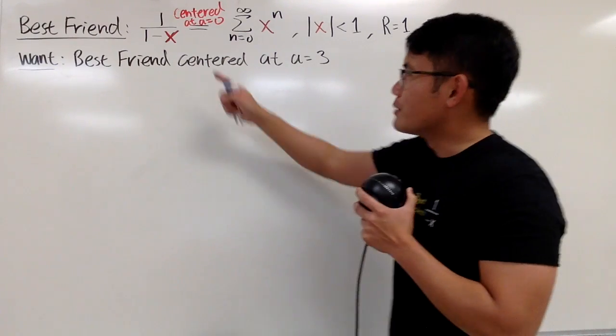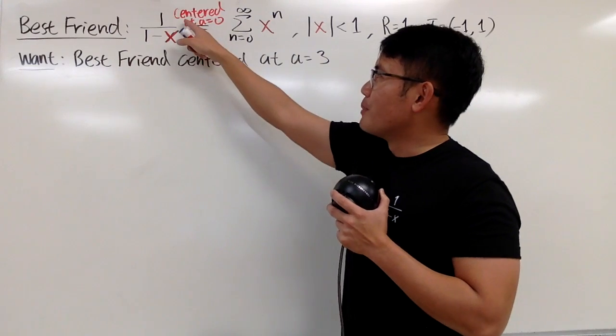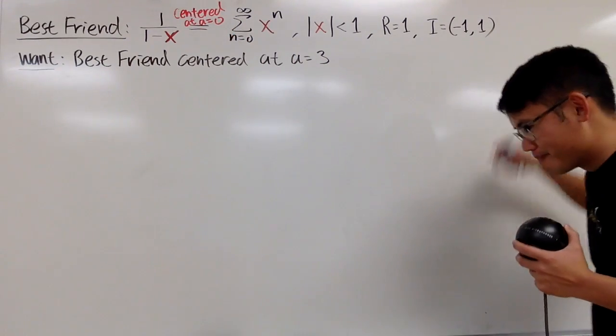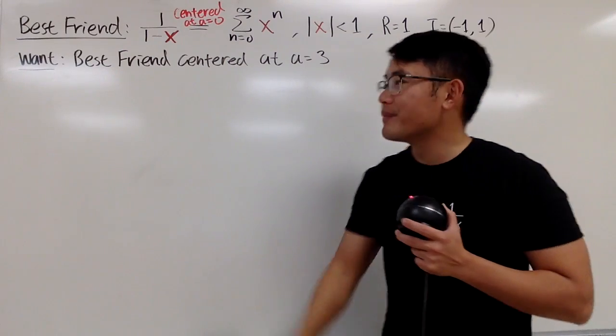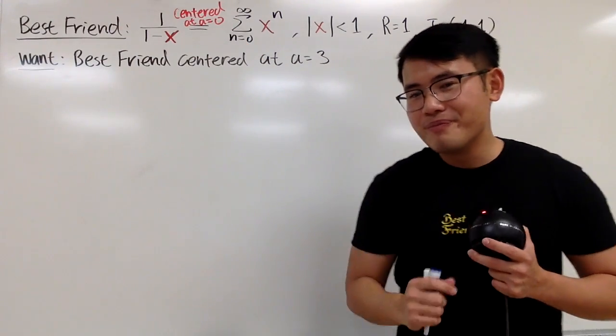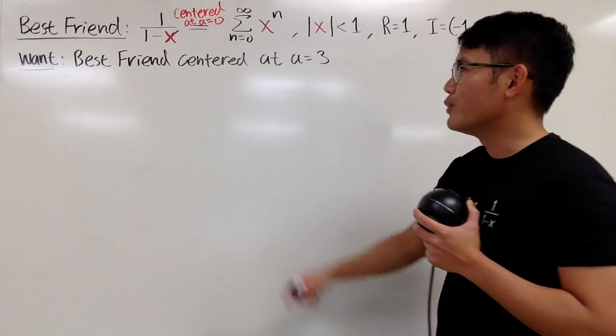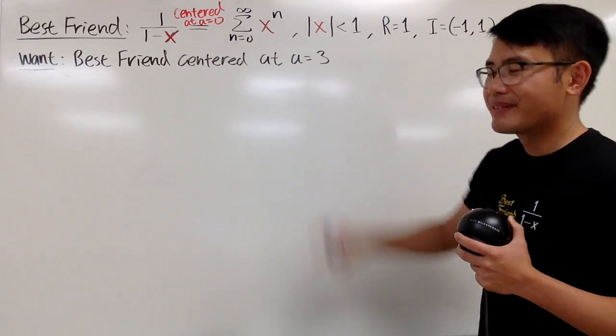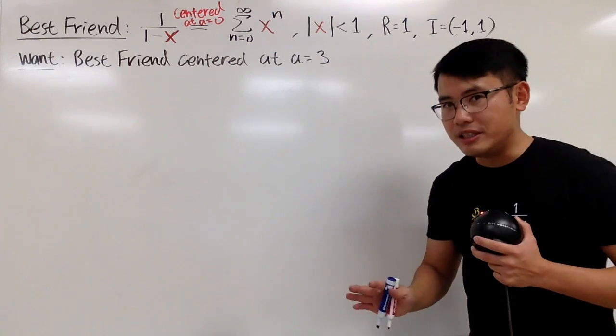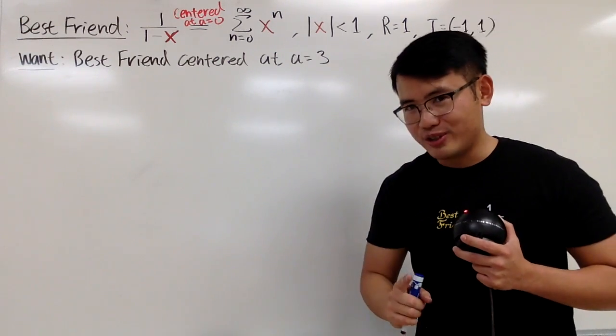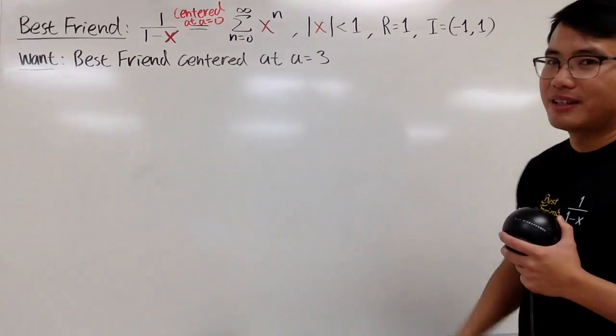Unfortunately though, when we talk about our best friend, we usually just talk about the center at a equal to 0, and then we get all this right here. But have you guys ever wondered, what happens if we move the a to a different place? So in this video, I will show you our best friend, centered at 3, right? And you also see that the radius of convergence will also change. So pay close attention to that.